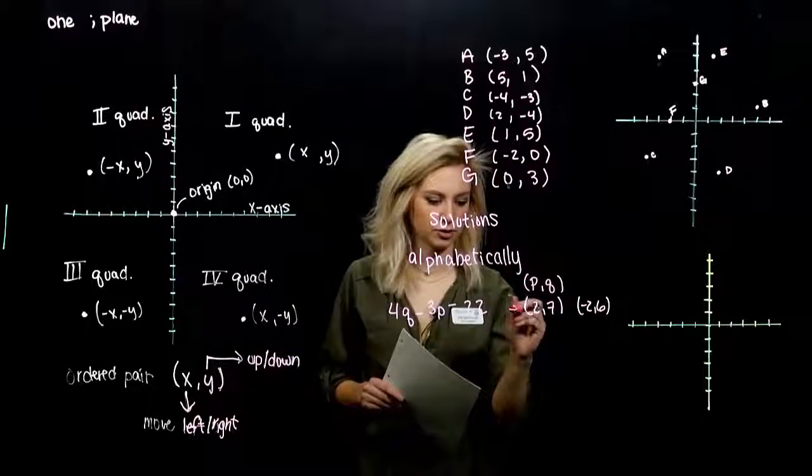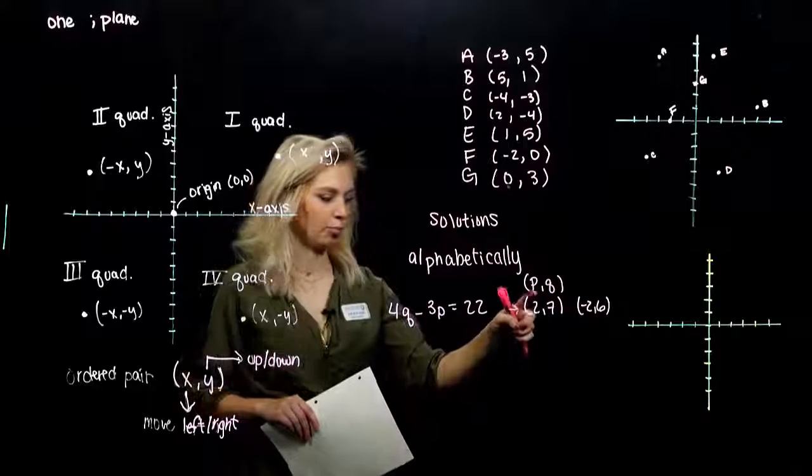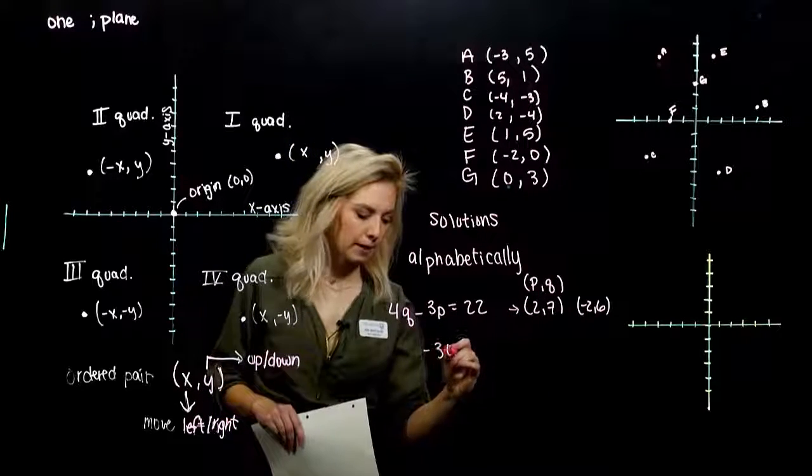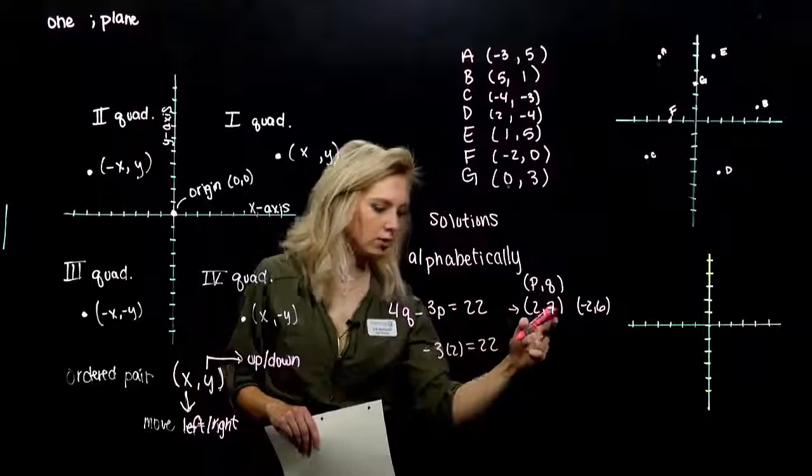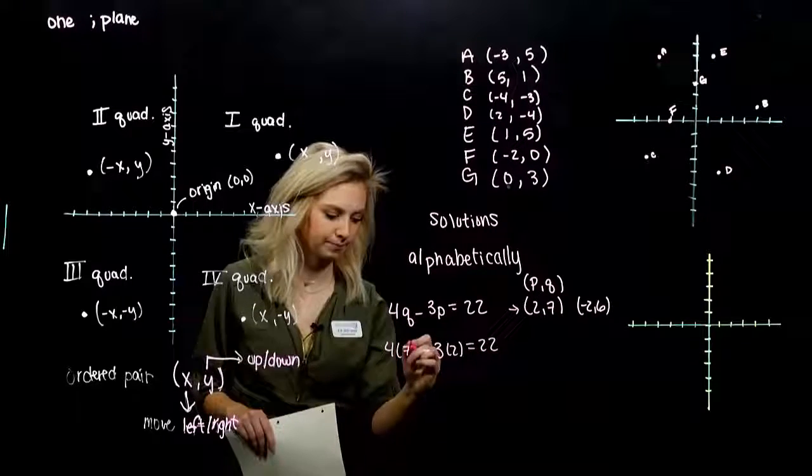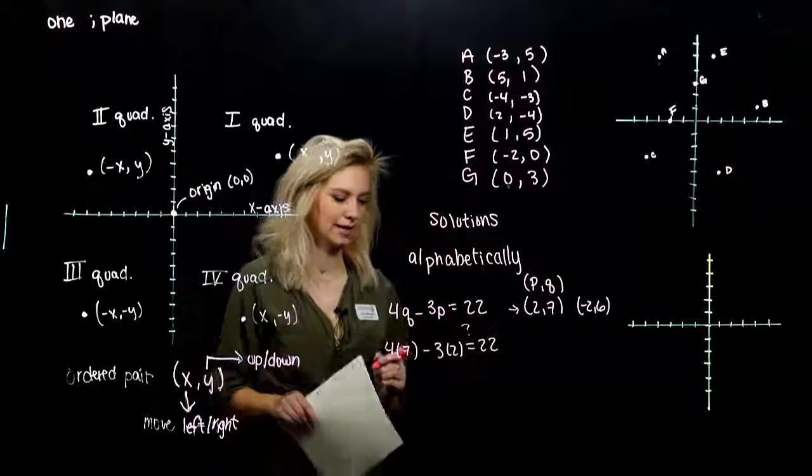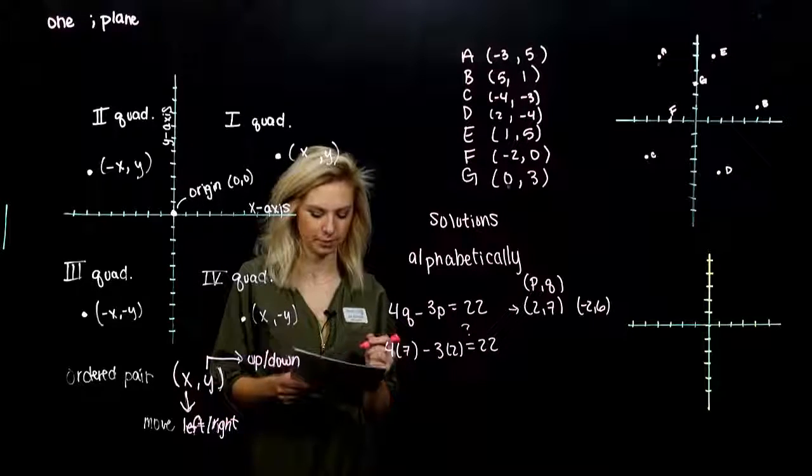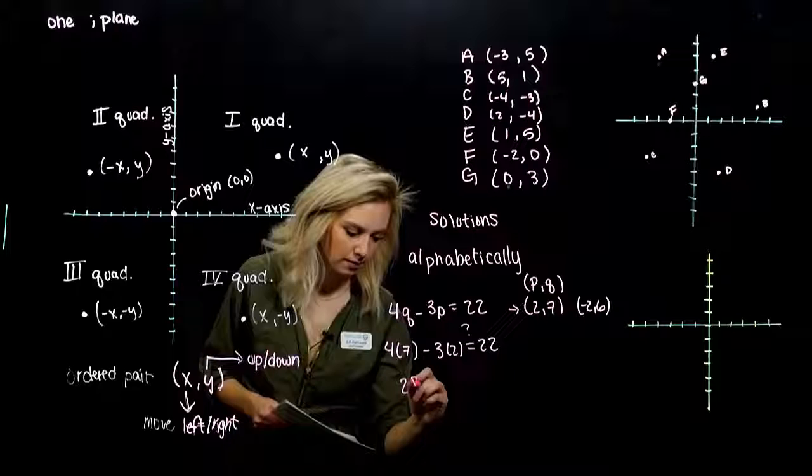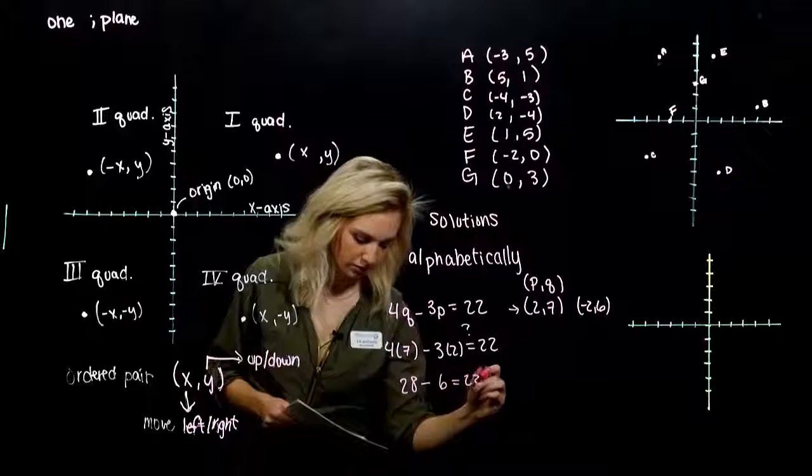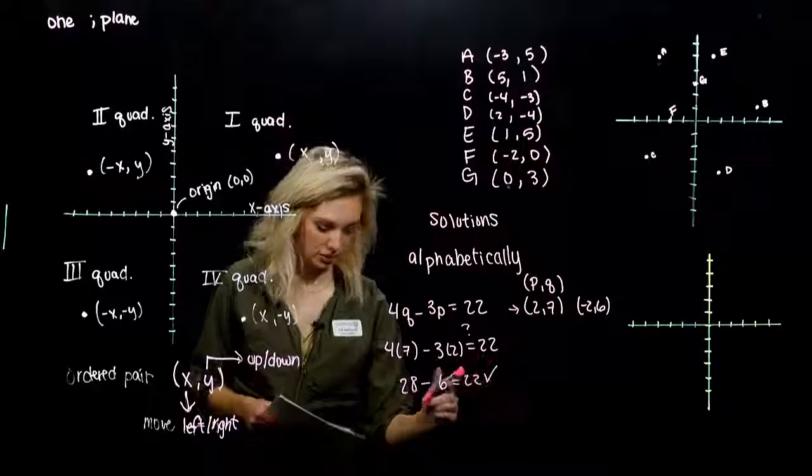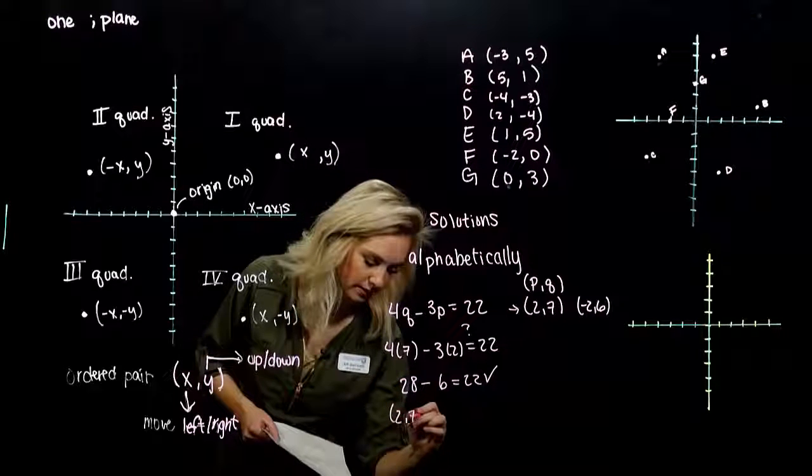Let's plug in and check 2, 7 first. P, I plug in 2. And for q, I'm plugging in 7. So let's check and make sure, is this actually true? I'm looking at 28 minus 6. Is that equal to 22? Yes. So we know that 2, 7 is a solution.